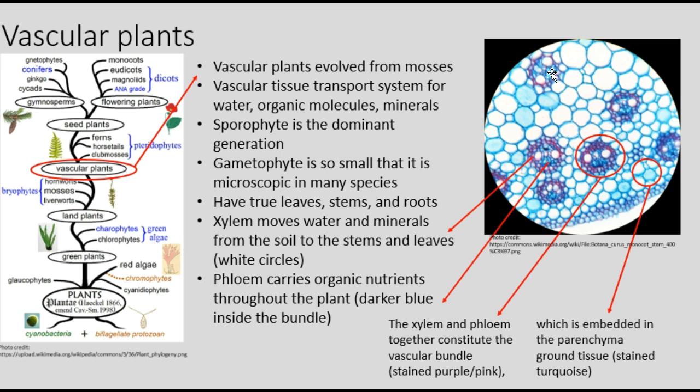Here are two ways to remember which is which with regard to the two vascular system components. If you think of the plant from A to Z, the A is the top and the Z is the bottom. Xylem — X — moves products from the bottom, i.e., the soil. And pH is for phloem and photosynthesis — phloem moves the products of photosynthesis through the plant.